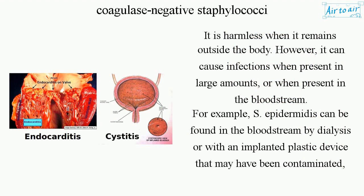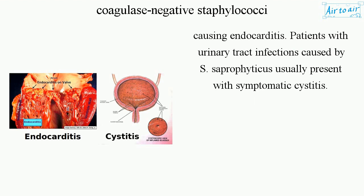For example, S. epidermidis can be found in the bloodstream via dialysis or with an implanted plastic device that may have been contaminated, causing endocarditis. Patients with urinary tract infections caused by S. saprophyticus usually present with symptomatic cystitis.